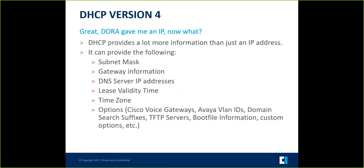How do you get a DNS server? DORA gives you an IP, but DORA also gives you a lot of other information like your subnet mask, gateway information, DNS server addresses, lease validity time, and a whole lot of options — like Cisco call manager options or Avaya option 179, where you tell the Avaya phone all sorts of interesting information. There are custom options, domain search suffixes — a lot of information can get passed back via DHCP.